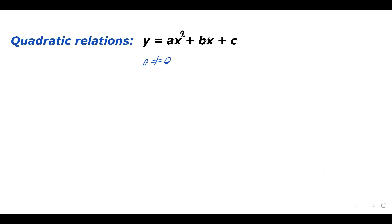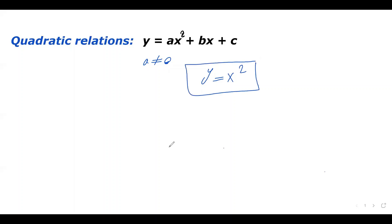If we plug in zero for b and c, we get y equals x squared, which is the simplest quadratic equation or the basic quadratic relation. The quadratic equation has a degree of two, so if you see an exponent of two on the variable, you can say that's a quadratic equation.